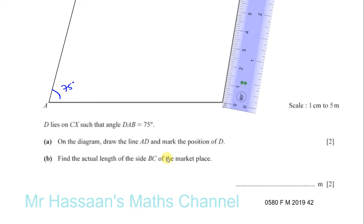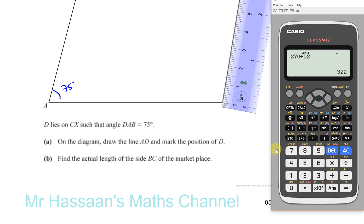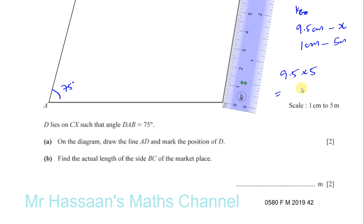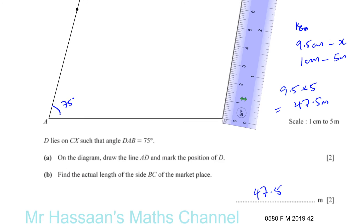So on the diagram, the length of BC is 9.5 centimetres, and we know that 1 centimetre represents 5 metres. We want to find how many metres 9.5 centimetres represents, so we multiply 9.5 by 5, which gives 47.5 metres. The actual length of BC is 47.5 metres.